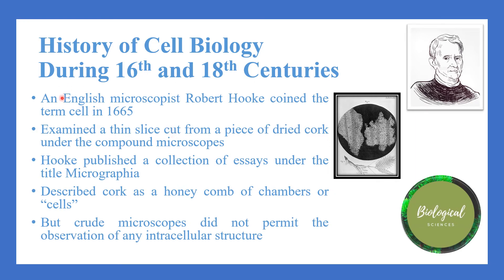The English microscopist Robert Hooke coined the term 'cell' in 1665. He examined thin slices cut from a piece of dried cork under compound microscopes that he built himself. Hooke published a collection of essays titled Micrographia, in which one essay described cork as a honeycomb of chambers or cells. These chambers are now recognized as empty spaces left behind after the living portions of the cell had disintegrated. Hooke compared the cells he observed in plants to the veins and arteries of animals, noting they were filled with juices in living plants, but his crude microscopes did not permit observation of any intracellular structure.